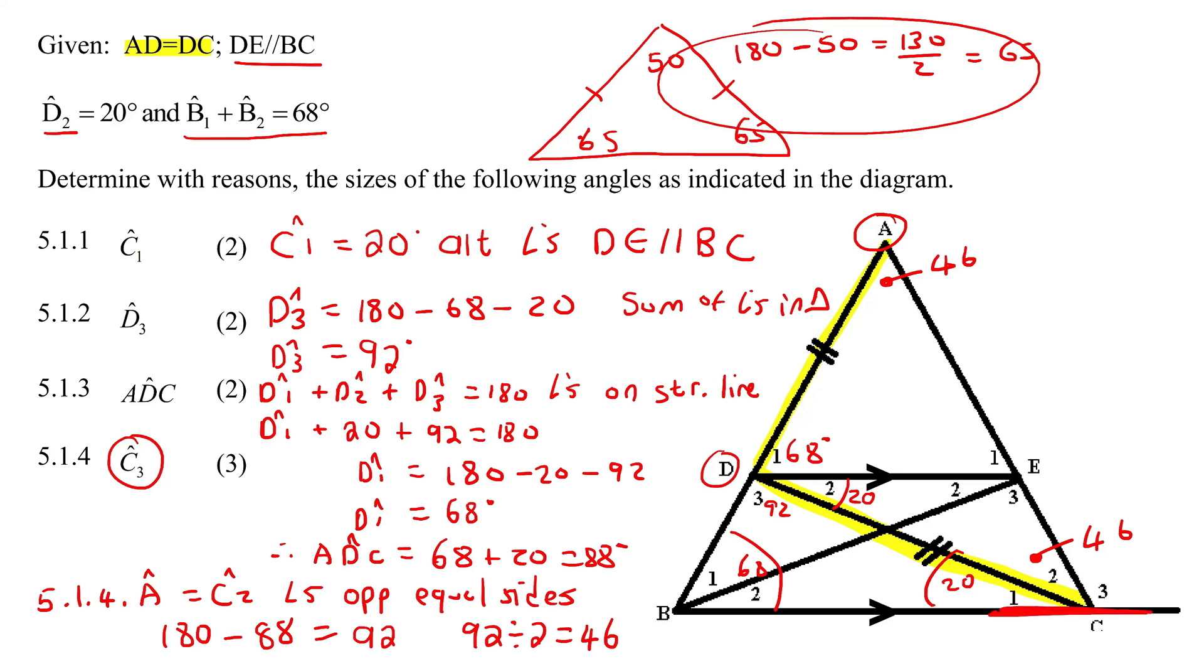Now, if you look at this C3, we can see that we have a straight line over here. So that means that these three angles there must add up to 180. So we could say that angle C1 plus C2 plus C3 must add up to 180, and that is just once again because of angles on a straight line. And so C1 is 20, C2 is 46, C3 is the unknown. And so to get C3 by itself, you would say minus and minus, and so C3 would be 114 degrees.